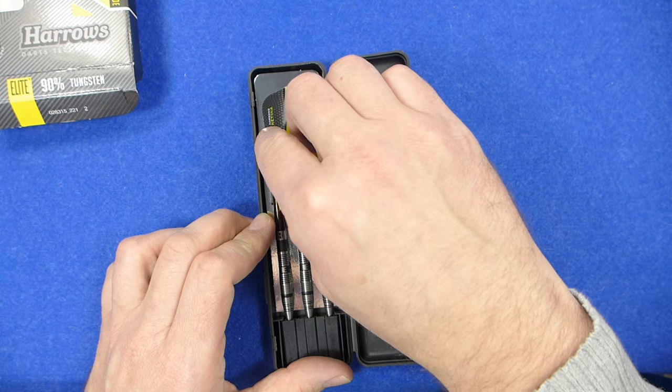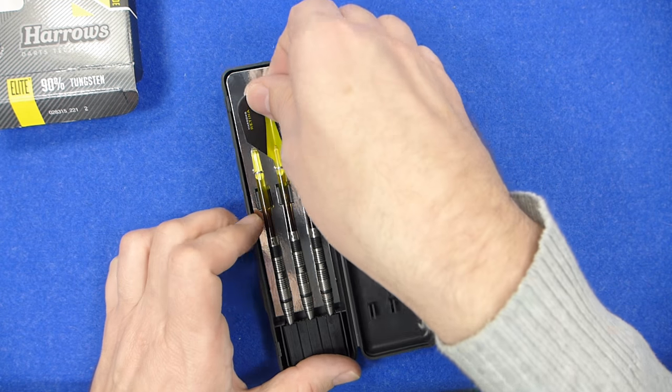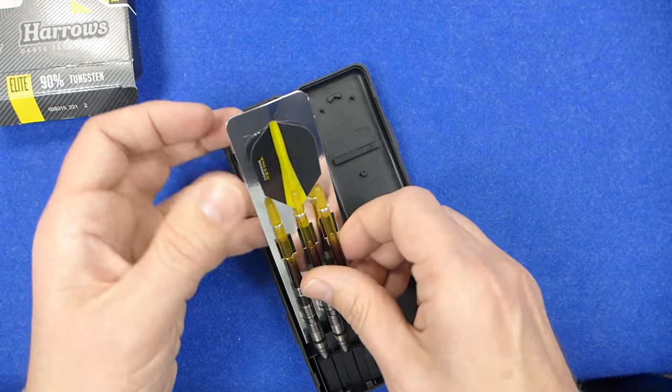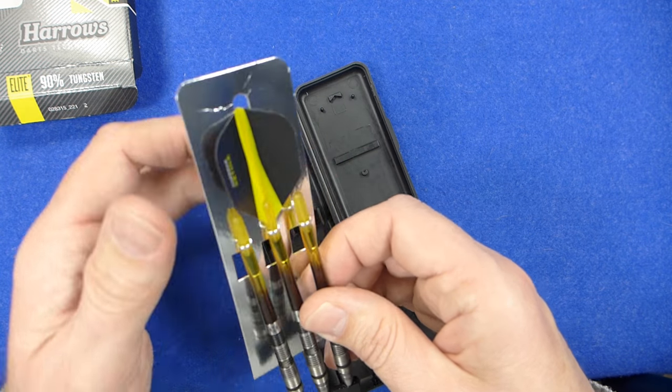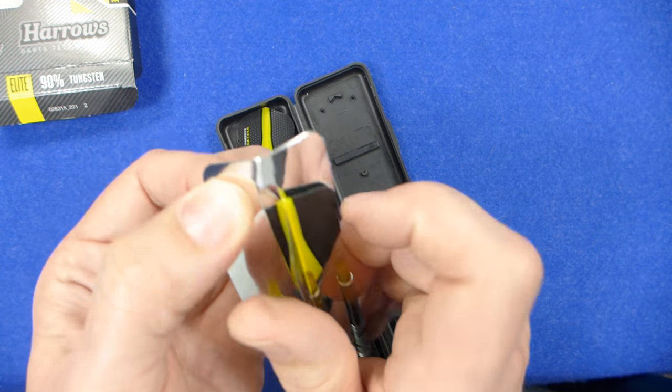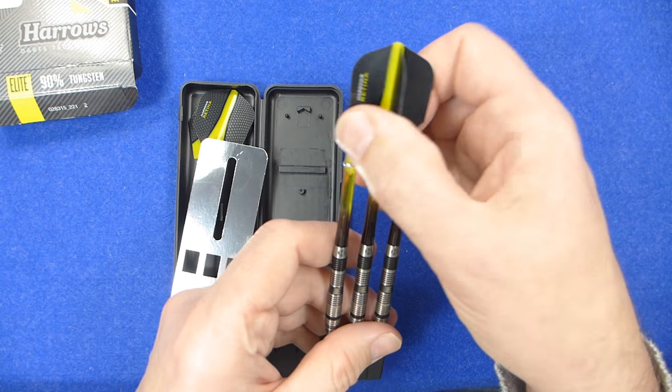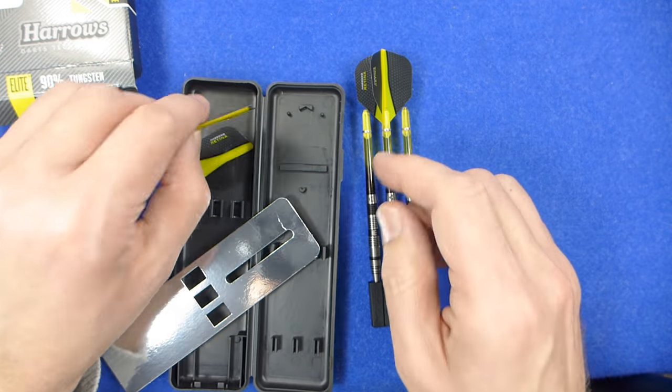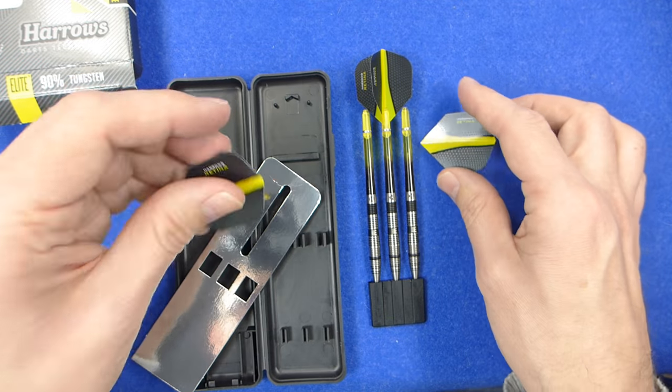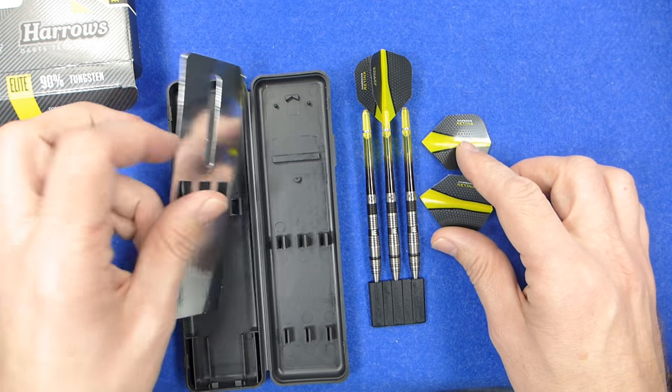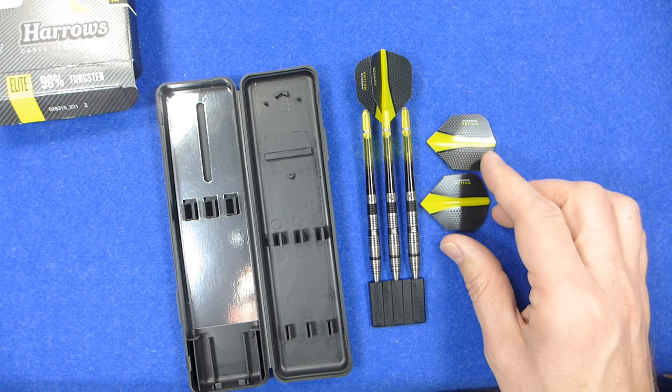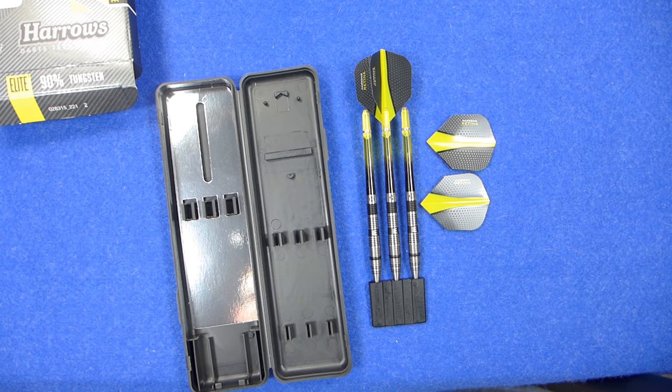Inside, as usual, you've got the hard Harrows plastic case and the darts fitted in pipe protector. You've got these very nice looking Harrows super grip fusion stems, two-tone black and yellow, very striking looking. The Harrows Retina Flight also stands out very nice in yellow and black.